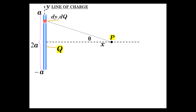That differential charge, which is then a point charge, is going to have a contribution to the electric field at point P. There are an innumerable number of differential charges that will all contribute to the electric field at P along here — sounds like an integration problem. This is the differential electric field from that differential charge at angle theta. It's also got the horizontal component, which is what we're going to be interested in. Based on how we set this up, there's symmetry associated with this that's going to help us.